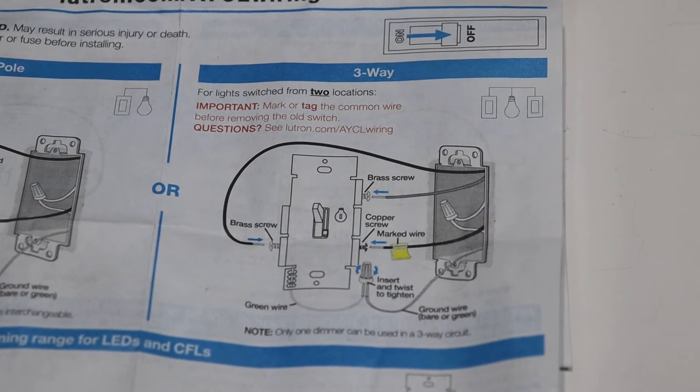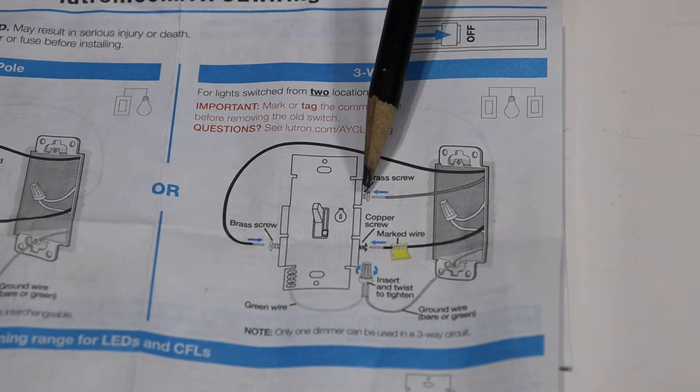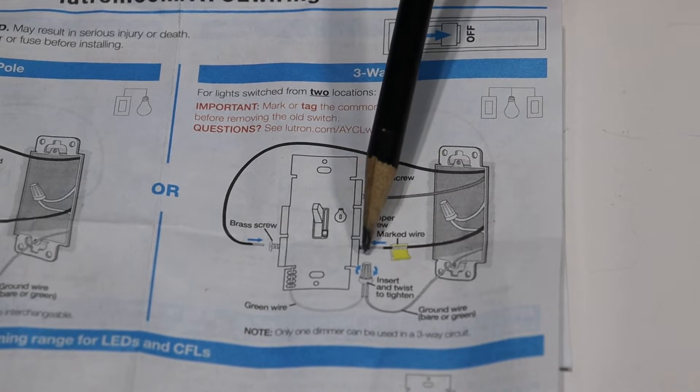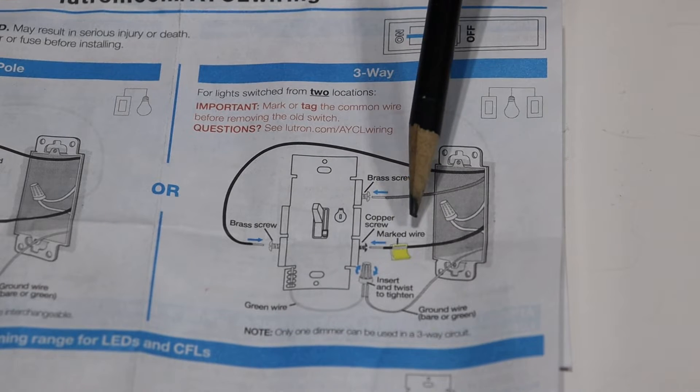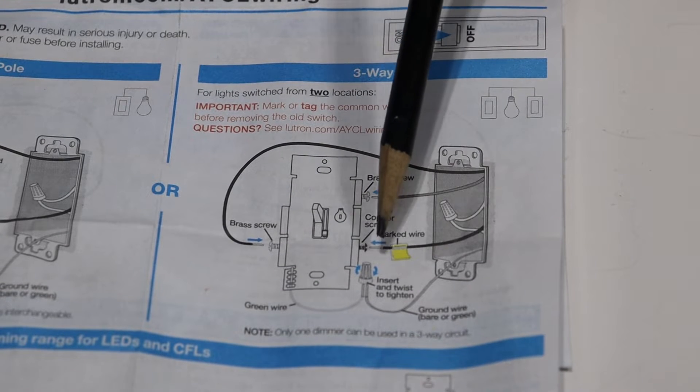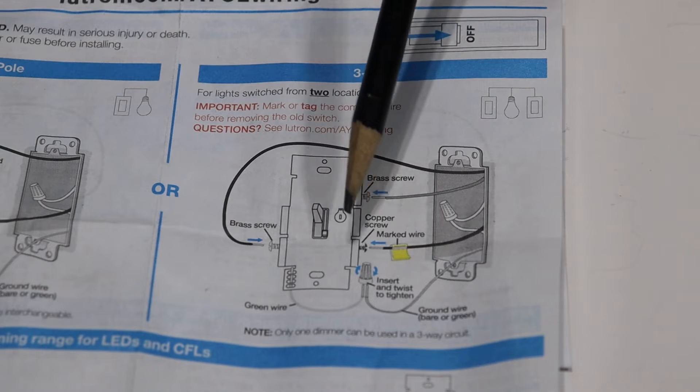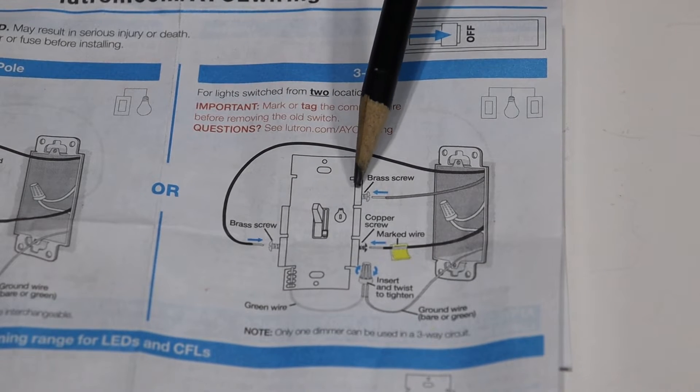So just like on the regular switch where you had a brass screw, a brass screw, and then the black screw or that copper screw, your hot wire is going to go to the copper screw and then your travelers are going to hook to the brass screws.